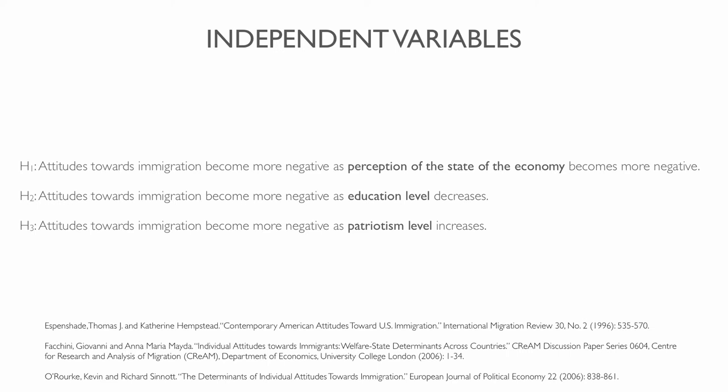Previous research has suggested economic conditions and labor market forces greatly influence attitudes towards immigration. Economic factors have traditionally been the go-to indicators in explaining these attitudes, and have been widely discussed. One common explanation is that individuals view immigrants as potential adversaries within the marketplace, competing for the same jobs. Based on this idea, as economic conditions deteriorate and unemployment rises, attitudes towards immigration are expected to become more negative. Individuals are not always properly informed, so their perception of the economy is not always reflective of its actual state. Even in prosperous economic conditions, attitudes towards immigration can be quite negative if negative perceptions of the economy prevail.